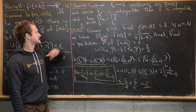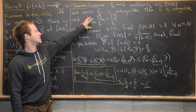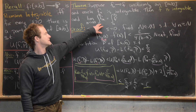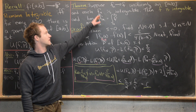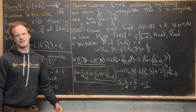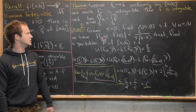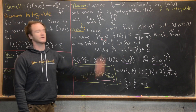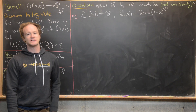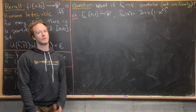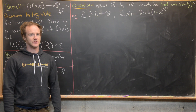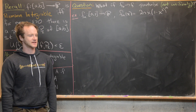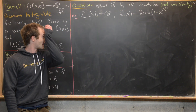Now we will show that the limit of the integrals of the f_n functions equals the integral of the limit — that's essentially what this second part of the theorem says. And via an example, we're going to see that we really did need uniform convergence; we couldn't get away with just point-wise convergence.